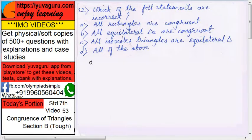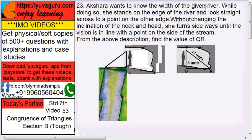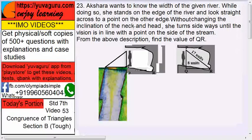Next, Akshara wants to know the width of a river. While doing so, she stands on the edge of the river and looks straight across to the point on the other edge. Without changing the inclination of the neck and the head, she turns ways until the vision is in the line with the point on the side of the stream. Means she turns opposite way. Now this is the measurement given. We have to find the value of QR, means the width of the river.